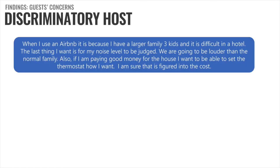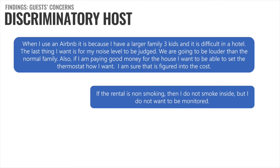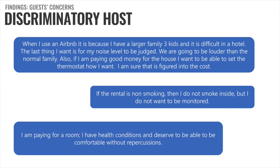The third concern was discriminatory host — the concern that the host may use data from smart devices to harm or act against the guest in some way. One participant wrote: 'When I use an Airbnb, it is because I have a larger family — three kids — and it is difficult in a hotel. The last thing I want is for my noise level to be judged. We are going to be louder than the normal family.' Another wrote about smoking: 'If the rental is non-smoking, then I do not smoke inside, but I do not want to be monitored.' A third wrote: 'I am paying for a room. I have health conditions and deserve to be comfortable without repercussions' — this in reference to not wanting to share smart thermostat data, where repercussions could mean the host controlling the thermostat or leaving a bad review.